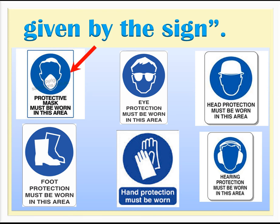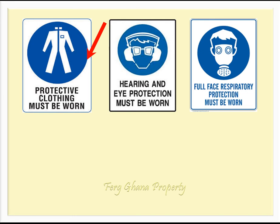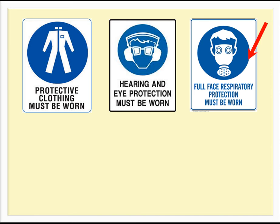Mandatory sign examples: Breathing masks must be worn. Eye protection must be worn. Head protection must be worn. Safety boots must be worn. Hand protection must be worn. Ear protection must be worn. Protective clothing must be worn. Hearing and eye protection must be worn. Full face respirator must be worn.